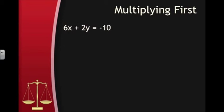For our final example, let's look at one that's a bit more complex: 6x plus 2y equals negative 10, and negative 4x plus 7y equals 40. Without using fractions, there's no way to multiply only one of the equations by a value to get opposite coefficients for either of the variables. So the key here is to think in terms of the least common multiple — the smallest number that both of the numbers will go into evenly. Since the x's have one positive coefficient and one negative, let's find the least common multiple of 6 and 4.